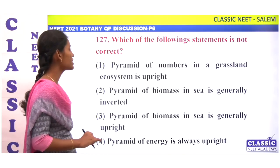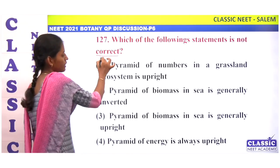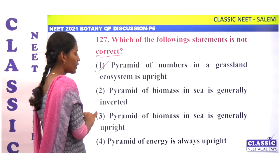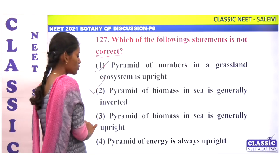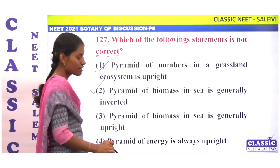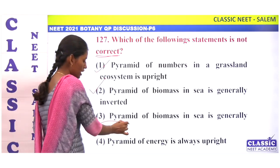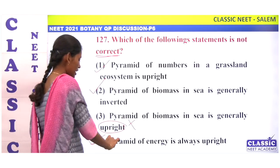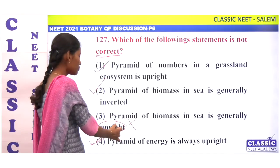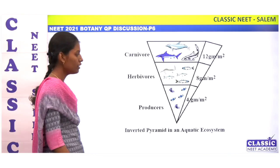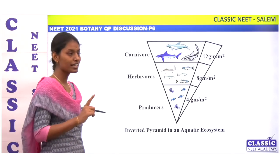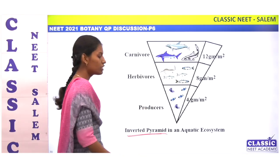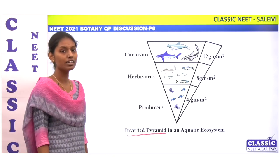Which of the following statements is not correct? Pyramid of number in a grassland ecosystem is upright — correct. Pyramid of biomass in a sea is generally inverted — correct. Pyramid of biomass is always upright — this is incorrect, as in aquatic ecosystems the pyramid of biomass is inverted. Incorrect statement is option 3.